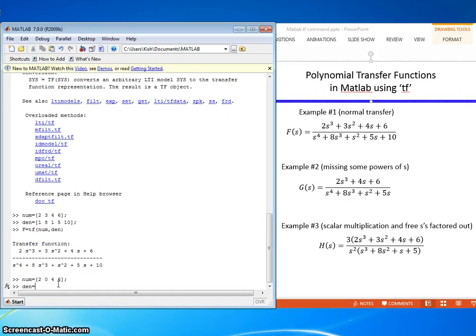And the denominator is 1, 8, 1, 5. And again, we don't have anything times s to the 0, so we have to put that 0.